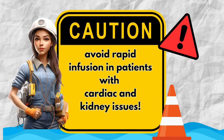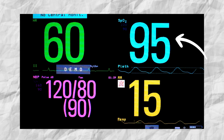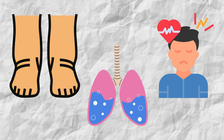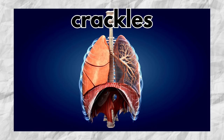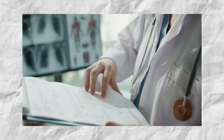Cautions: Avoid rapid infusion, especially in patients with compromised cardiac and renal function. Continuously monitor the patient's vital signs including blood pressure, heart rate, respirations, and oxygen saturation, as changes may indicate fluid overload presenting with edema, crackles in the lungs, and changes in mental status. Crackles sound like rubbing hair next to your ear. Regularly check electrolyte levels to monitor for hemodilution or elevated levels of sodium, potassium, and chloride.